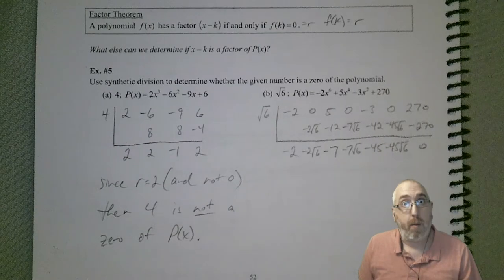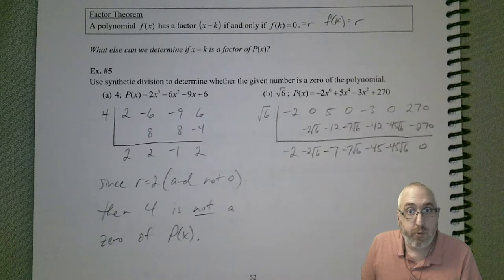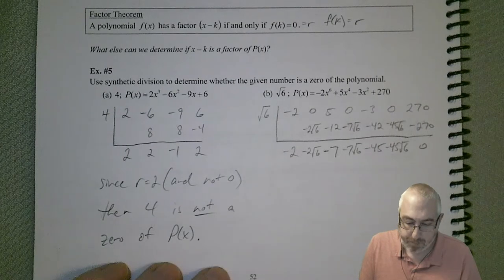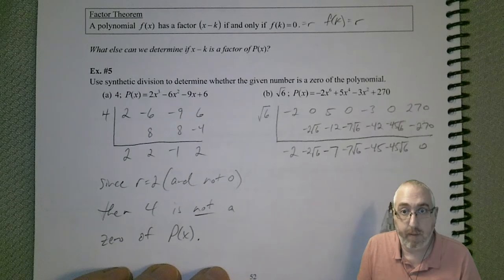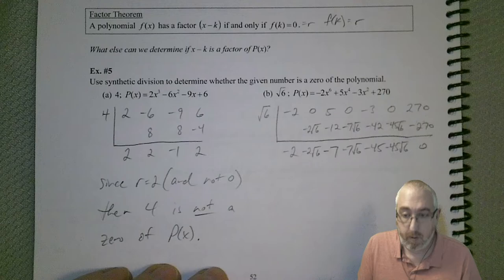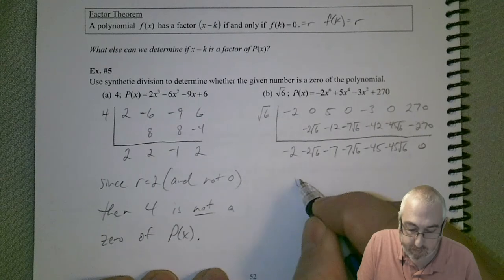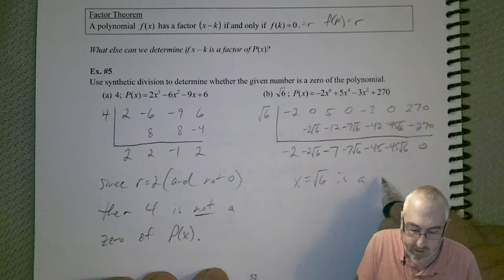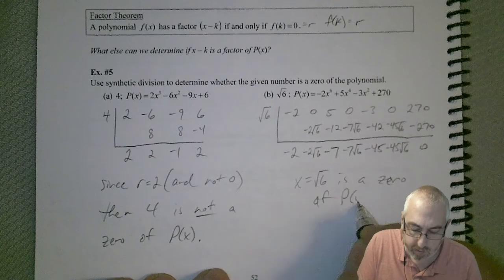So, amazing what one little addition, incorrect addition, will do to you. So you really want to be careful. Especially when you have these long polynomials that you have to break down. So, we can see that x equal to the square root of 6 is a zero of p(x).